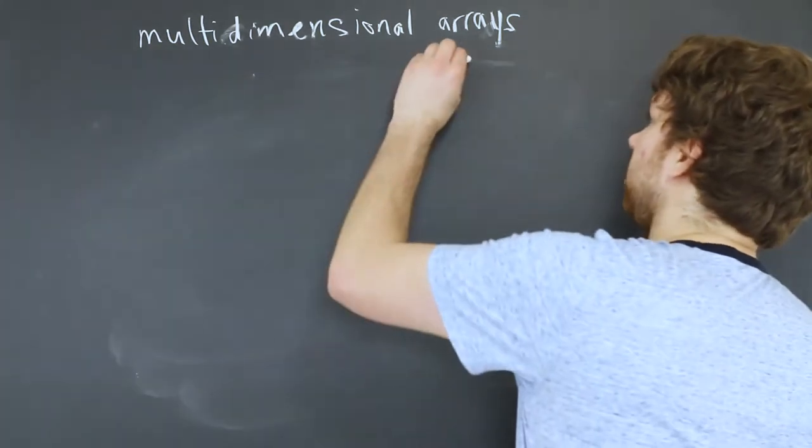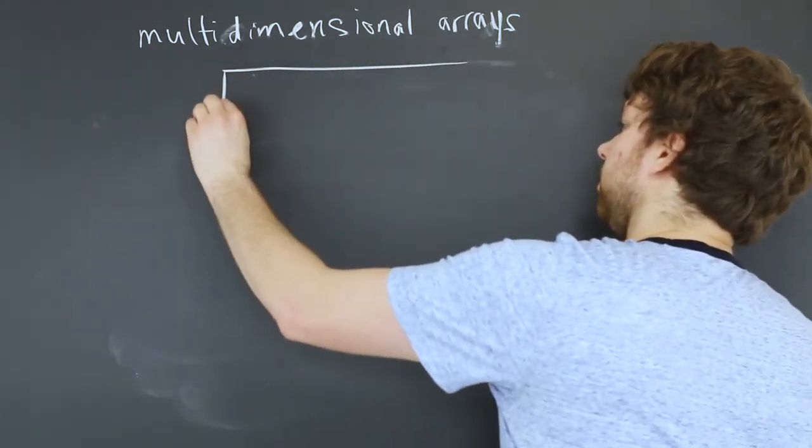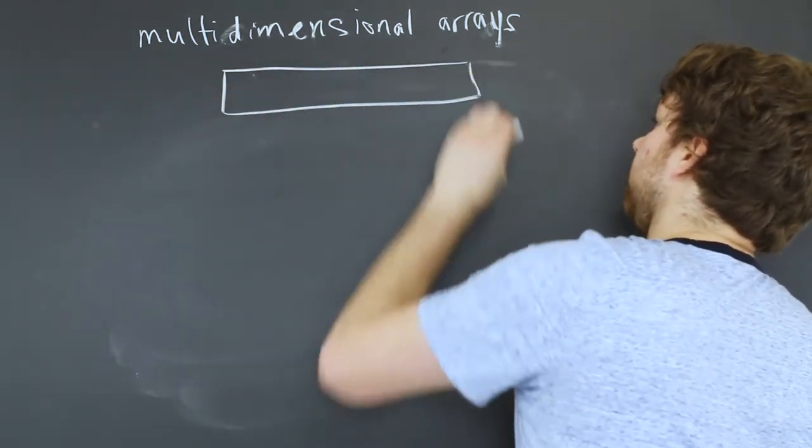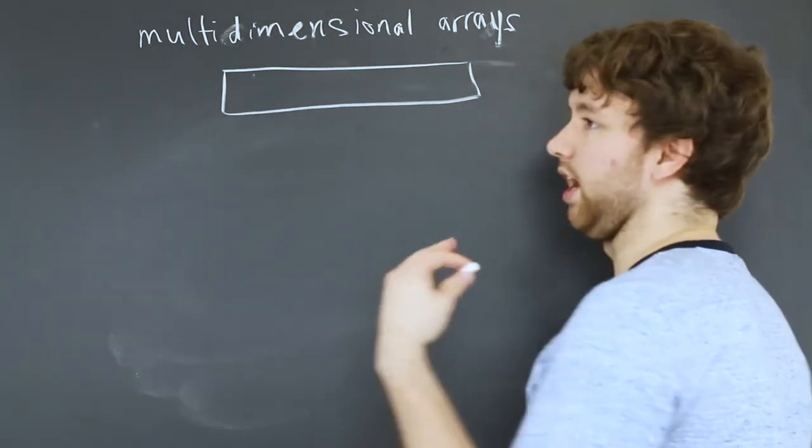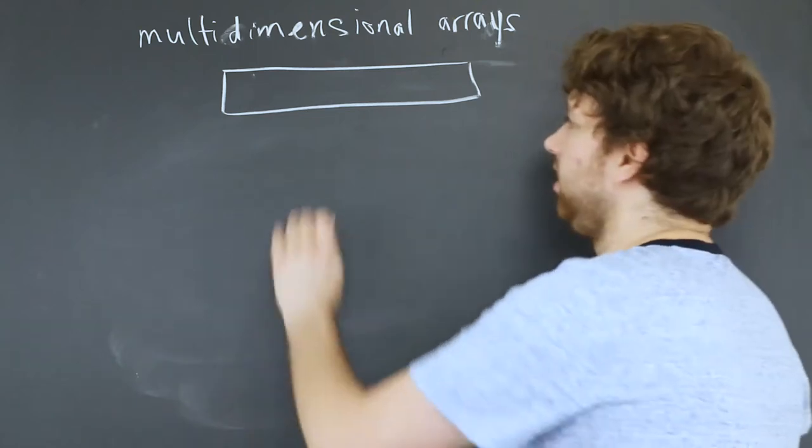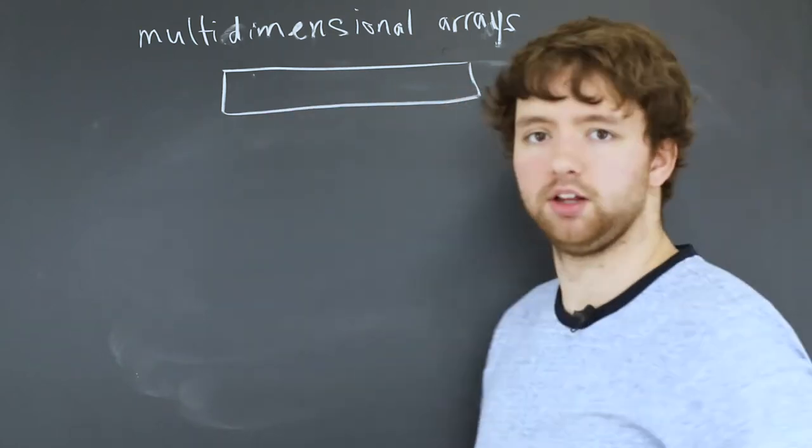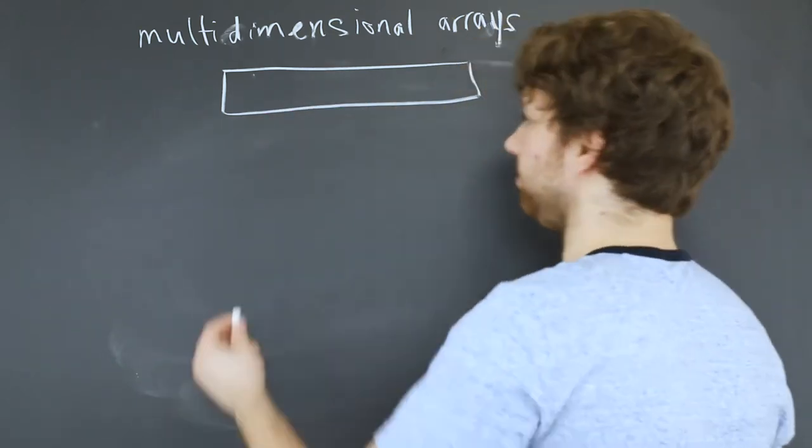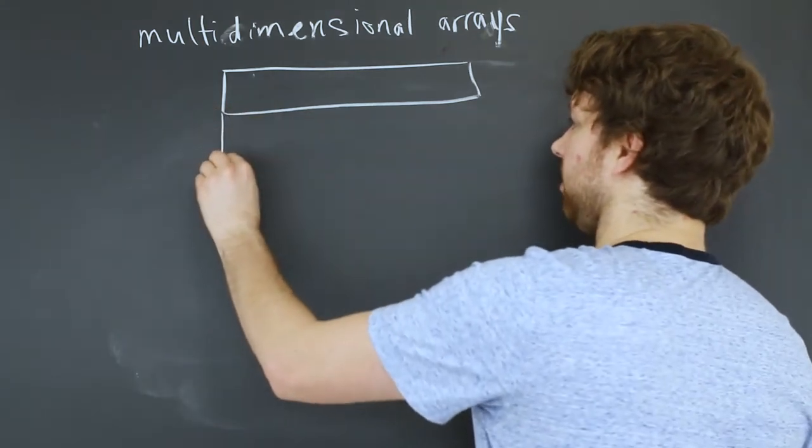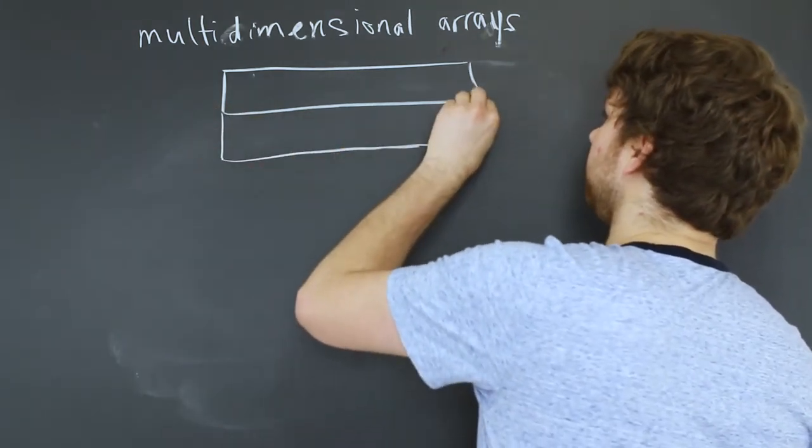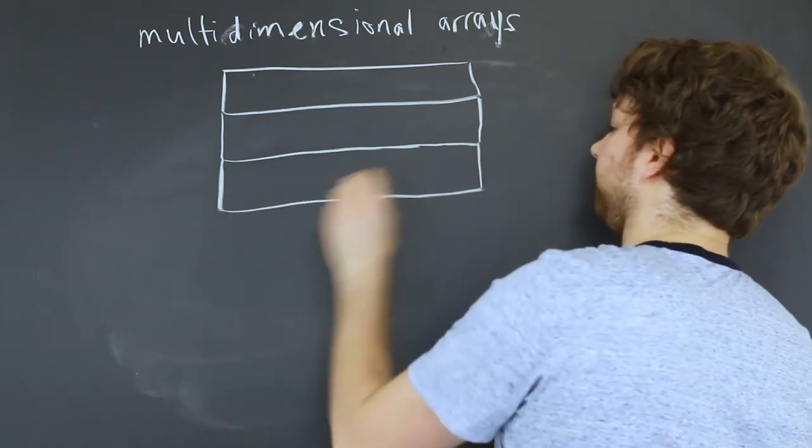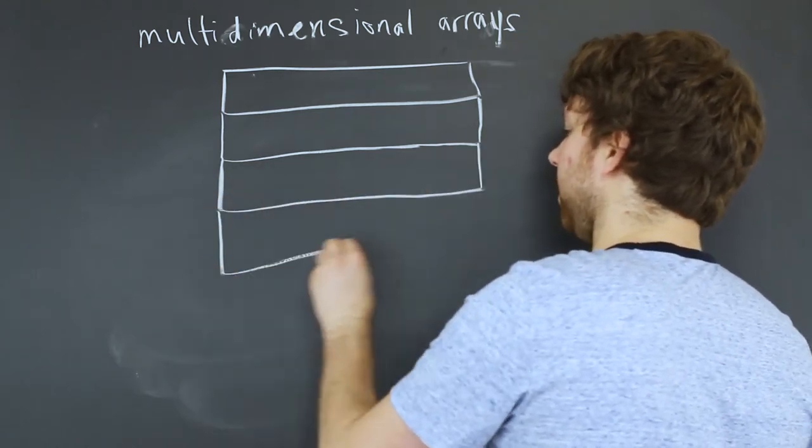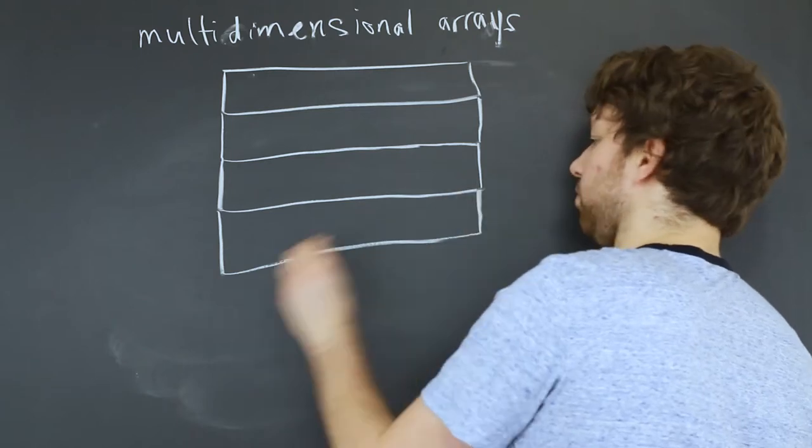Originally we thought of an array like this, and we used the example of student grades. We had one person's grades in an array. Well, with a multi-dimensional array, you can think of the same thing, but now you have multiple students' grades in the same structure, same format, but now you can reference multiple students.